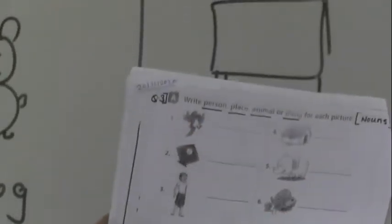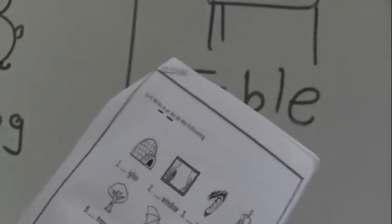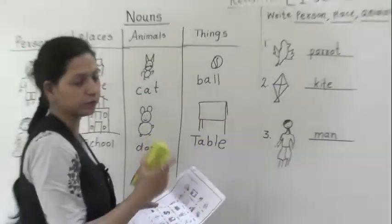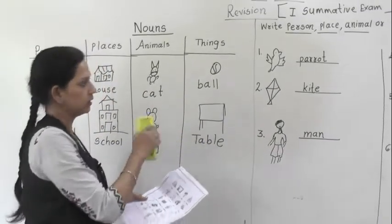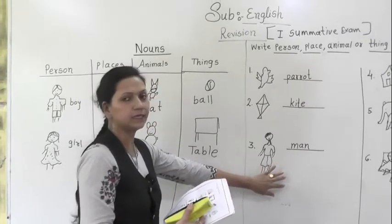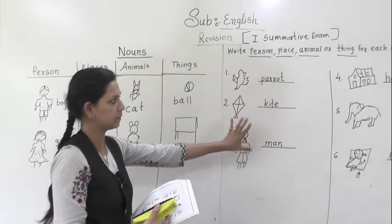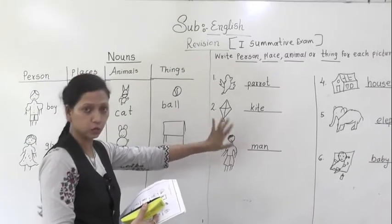Have you understood this? What we learn today about the noun. This worksheet page you have to solve. After that a and an. What we are going to learn? A and an. I am going to rub this board. Have you understood this? This you have to write in your notebook as well. What is your homework today? This page you have to write in your notebook.